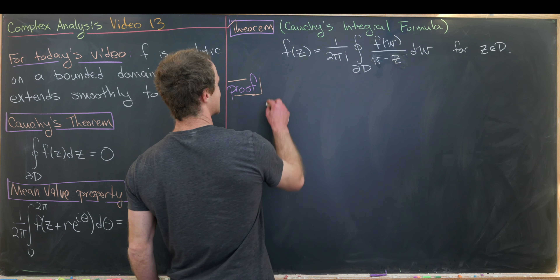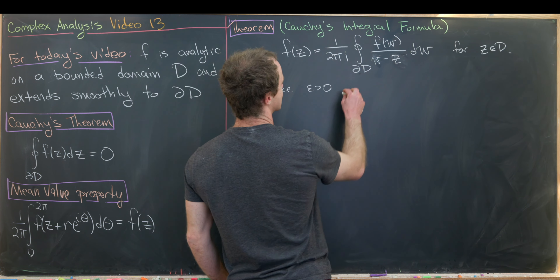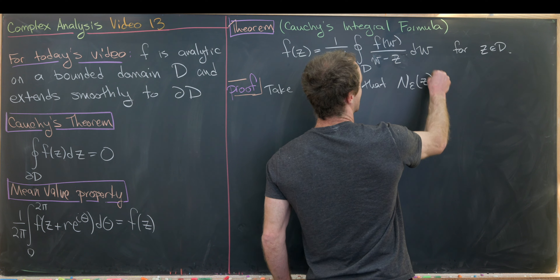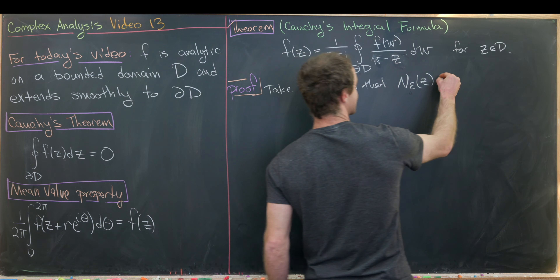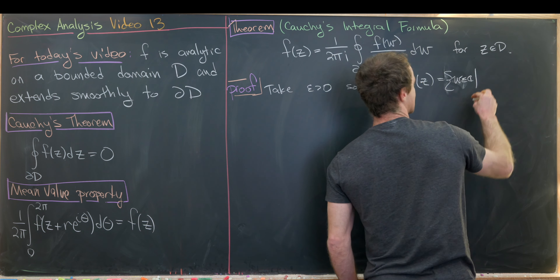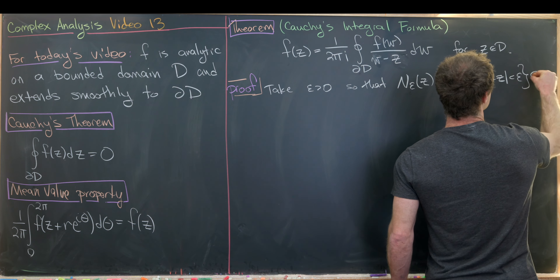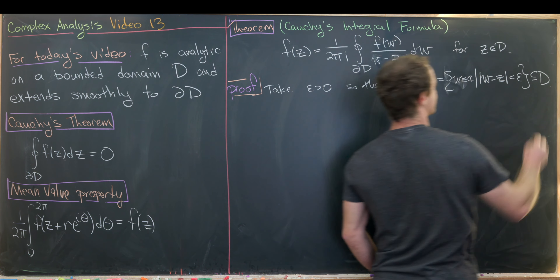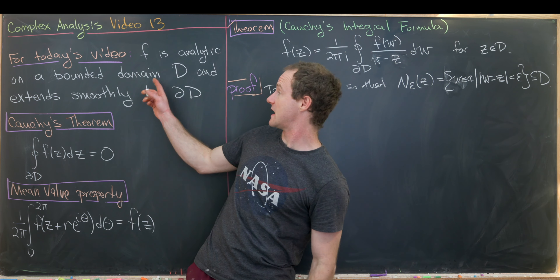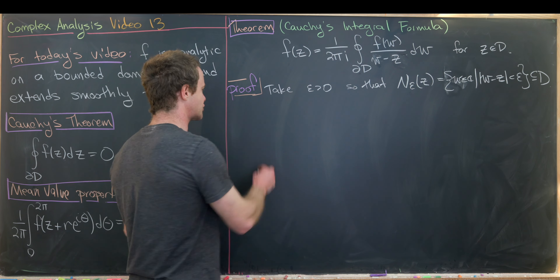We first take some ε > 0 so that the neighborhood around z with radius ε — that is, all w in ℂ such that |w − z| < ε — is totally contained in D. We can do that because D is a bounded domain, and a domain is an open set.